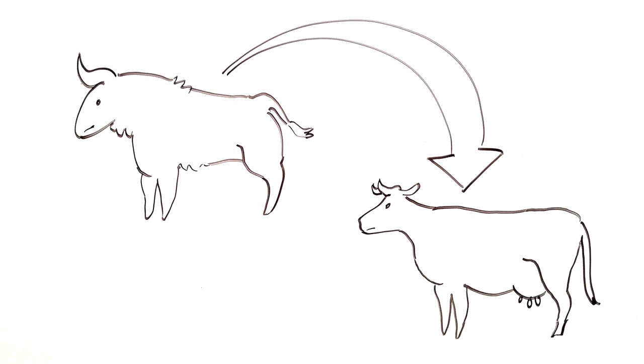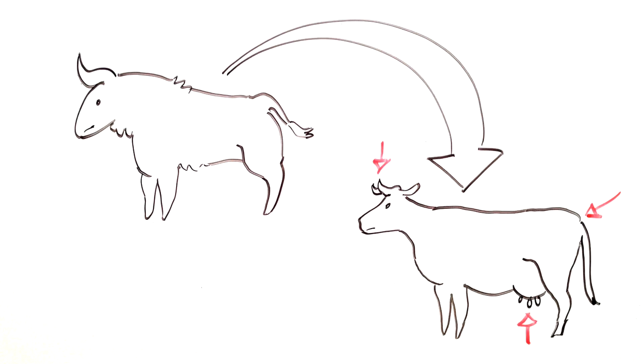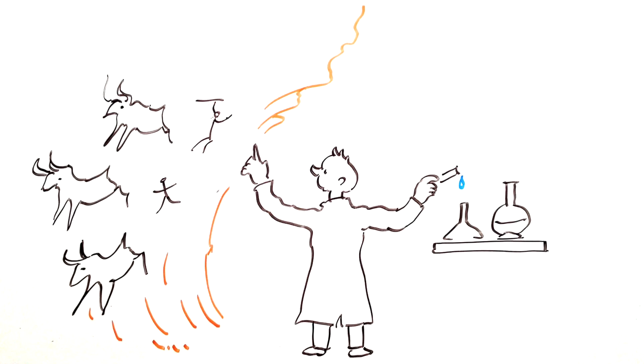There are three ways you could do it. The first way is called backbreeding. Just as we made cows from wild Urex a long time ago by choosing their most desirable traits, we could make them wild again by gradually selecting for traits that we think the original animal may have possessed. This is sort of a guessing game.